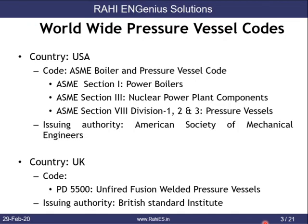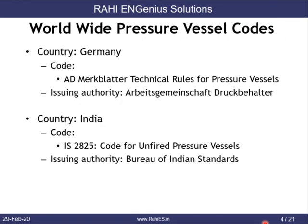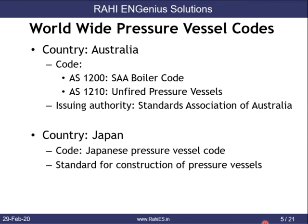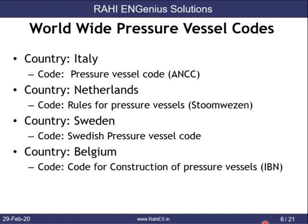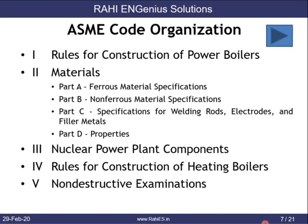Let's see what codes are published by various countries. The USA has the famous ASME Boiler and Pressure Vessel Code, the UK has PD 5500 by the British Standards Institute, Germany has the Eddie Mark Blatter, and India has IS 2825 by the Bureau of Indian Standards. Various countries have developed their own codes and standards. Out of these, ASME codes are most popularly used in pressure vessel design. Before reviewing the ASME code structure, let's look at a presentation from the ASME website describing how their codes have evolved and the benefits of using them.